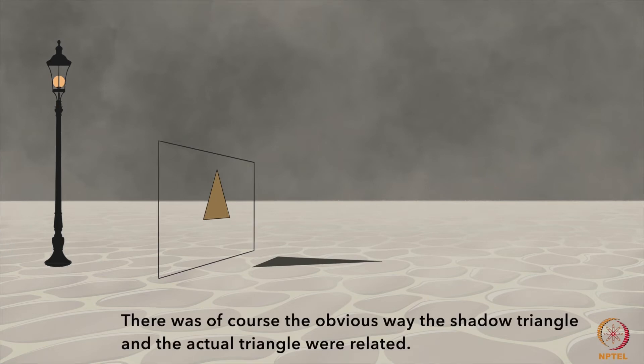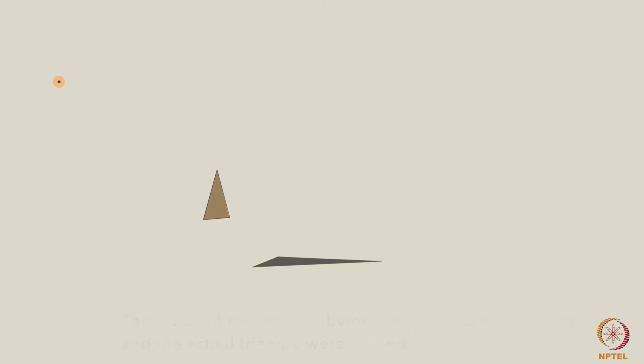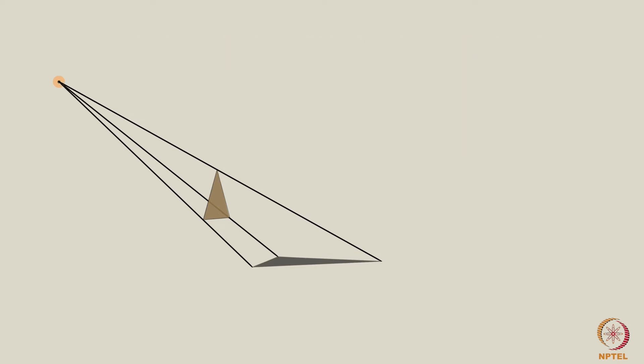There was, of course, the obvious way the shadow triangle and the actual triangle were related. The three lines determined by the corresponding vertices of the actual triangle and the shadow triangle all meet at the light source. In other words, they are concurrent at the point from which the light is emanating. In this situation, I would say the two triangles are in perspective from a point.